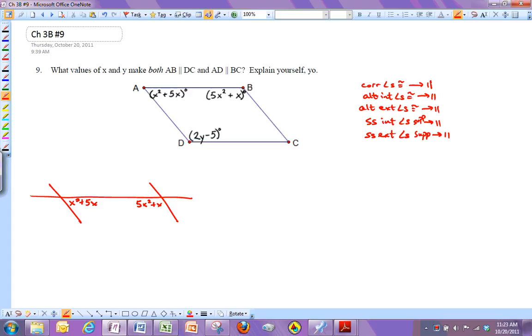they're same side interior angles. So if same side interior angles are supplementary, that makes these lines parallel. So I want to make them supplementary. x squared plus 5x plus 5x squared plus x should equal 180.